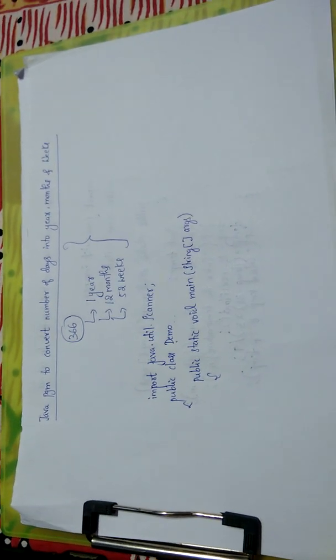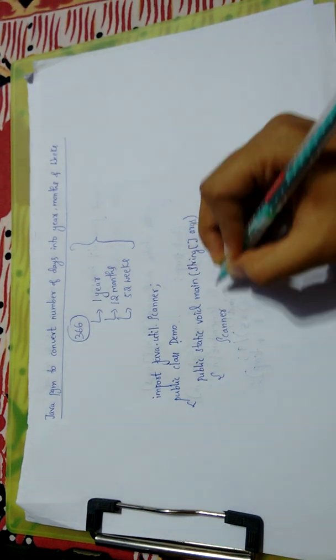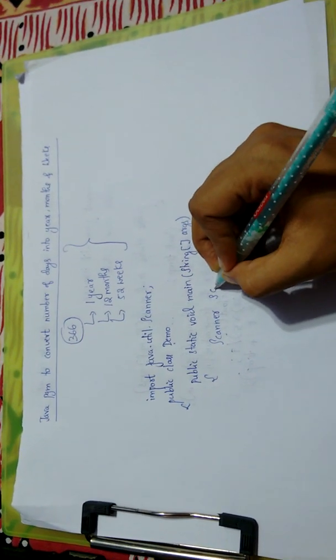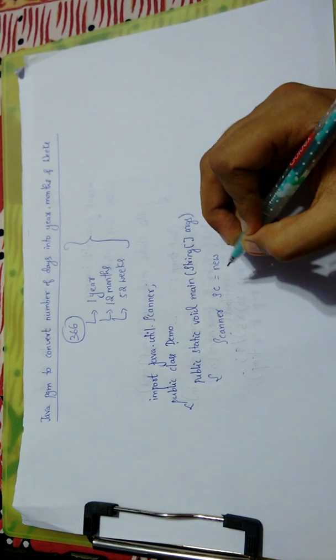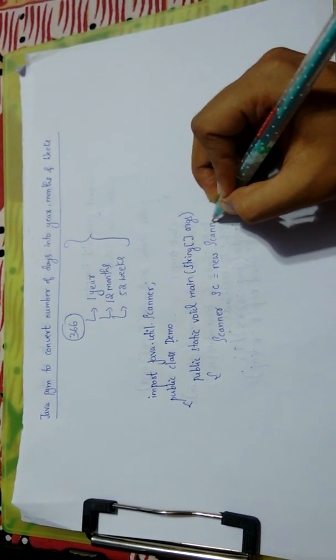We will create an object of the Scanner class. You can give any name here. I'll name it sc equals new - new is the keyword used to create an object - new Scanner of